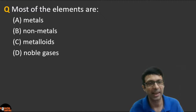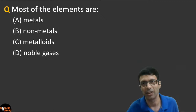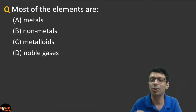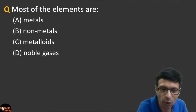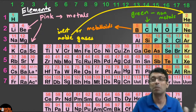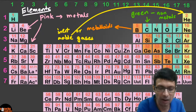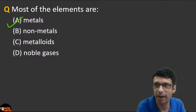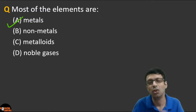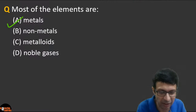Come on, everybody try — metals, non-metals, metalloids, or noble gases? The correct answer is metals. As you see, the maximum color in the periodic table is pink — the metals. Most of the 118 elements are metals; there are around 90 metals, with fewer non-metals, metalloids, and noble gases.